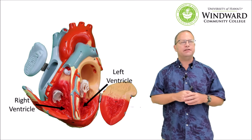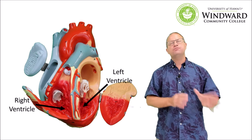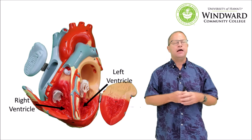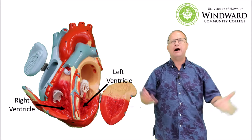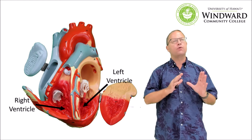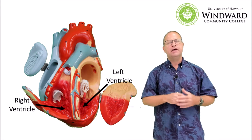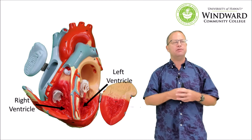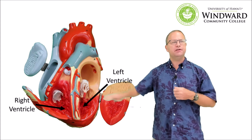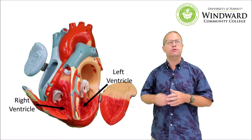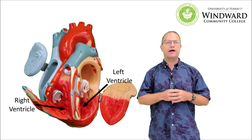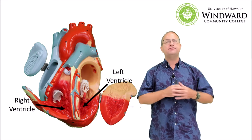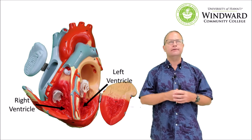Now let's take a look at the ventricles. The ventricles are much more muscular chambers because they have to pump blood much farther distances. The left ventricle is pumping through the whole body, while the right ventricle is pumping to the lungs. It has to overcome all the vascular resistance in the enormous capillary beds of the systemic circuit, which is why these are large muscular chambers — with the left being much more muscular than the right.